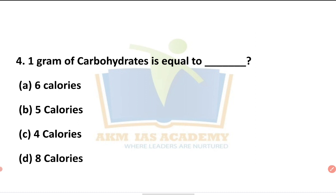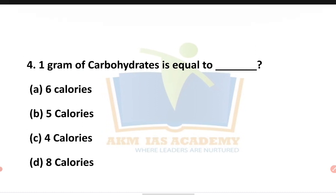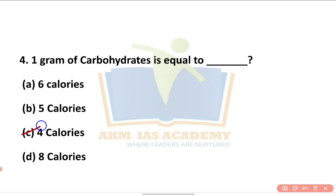Next question: one gram of carbohydrates is equal to how many calories? Options are six, five, four, or eight calories. The answer is C — four calories. One gram of protein is also equal to four calories. But one gram of fat is equal to nine calories. Very important: carbohydrate and protein give four calories per gram, while fat gives nine calories per gram.